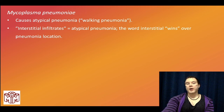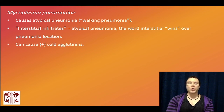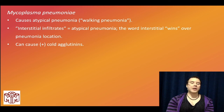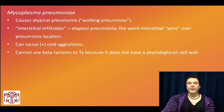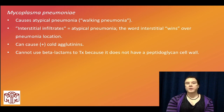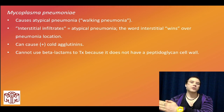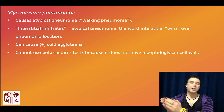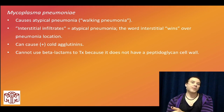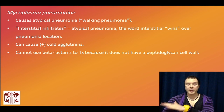Mycoplasma can cause positive cold agglutinins, which are IgM antibodies against RBCs, causing cold autoimmune hemolytic anemia. Very high yield for USMLE: Mycoplasma does not have a peptidoglycan cell wall. That's why you cannot treat Mycoplasma with amoxicillin or beta-lactams — it doesn't have a peptidoglycan cell wall.